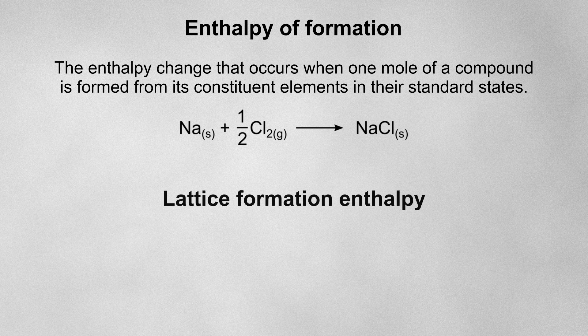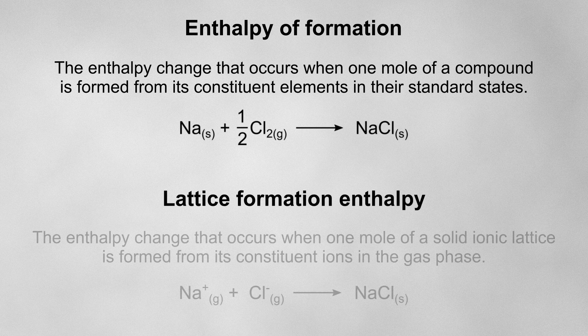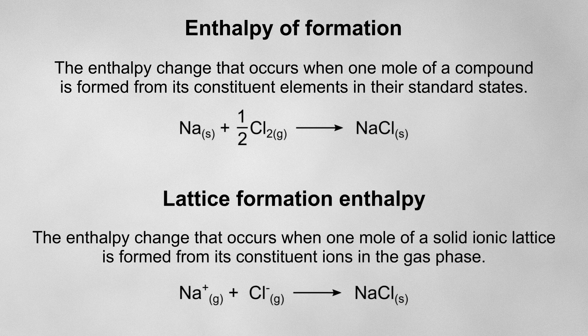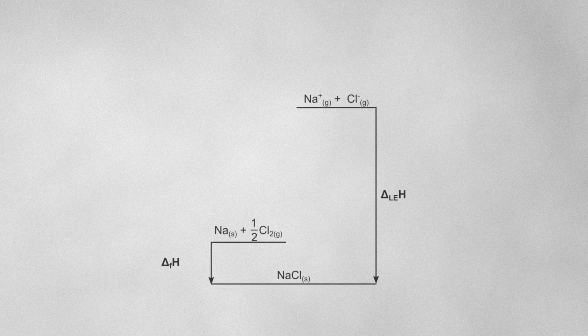The lattice formation enthalpy is the enthalpy change that occurs when one mole of a solid ionic lattice is formed from its constituent ions in the gas phase. We can see that both of these reactions lead to the formation of one mole of sodium chloride, so we can start setting up our Born-Haber cycle like this.